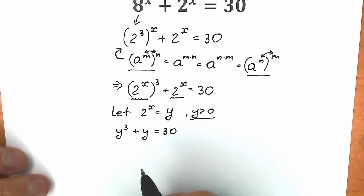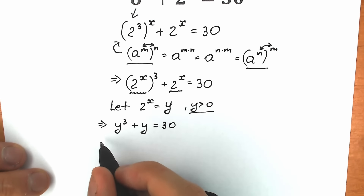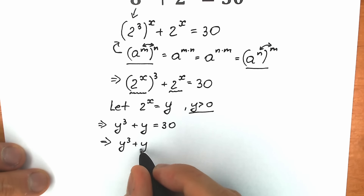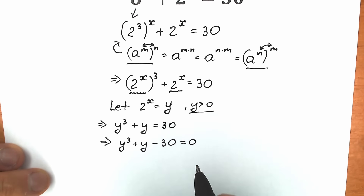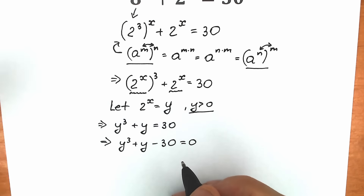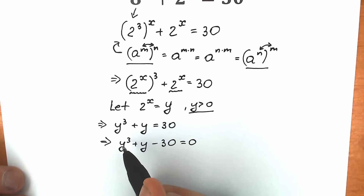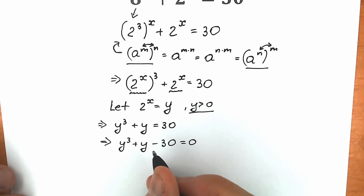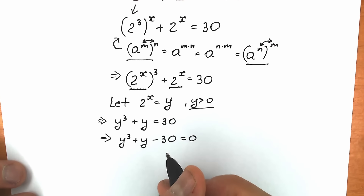There are a lot of approaches to solve a cubic equation, but first of all, let's bring everything from the right to the left. As a result, we have y cubed plus y minus 30 equal to zero. I notice that we have a third power, and we can express 30 as a cube — specifically, 27 plus 3.